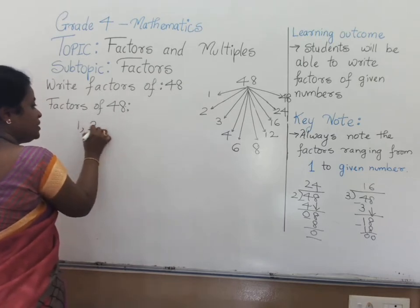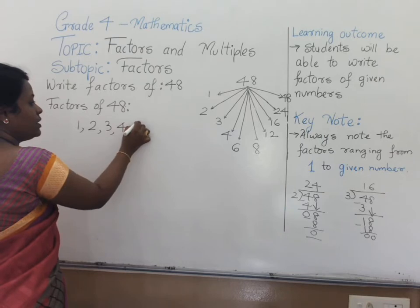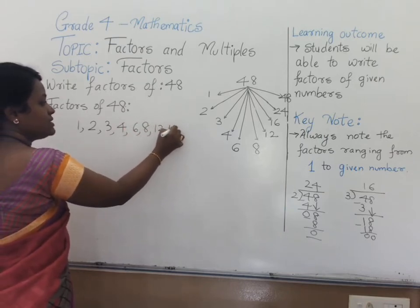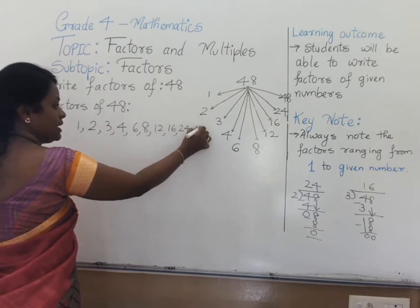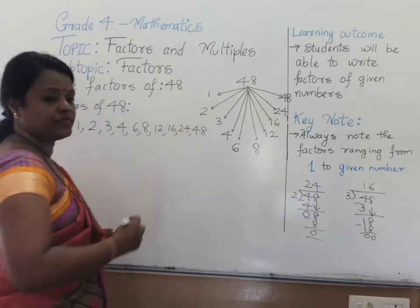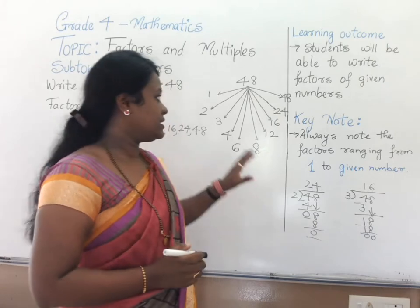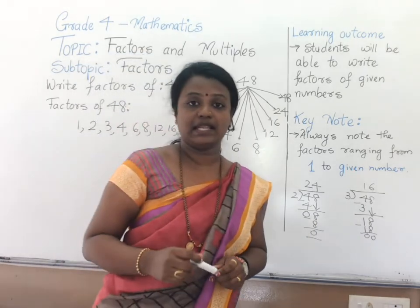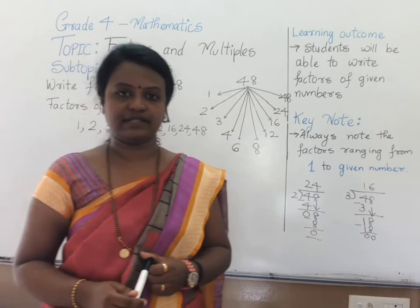Let us note down: 1, 2, 3, 4, 6, 8, 12, 16, 24, 48. Kindly note, using this method you will have very few chances of missing any of the factors.